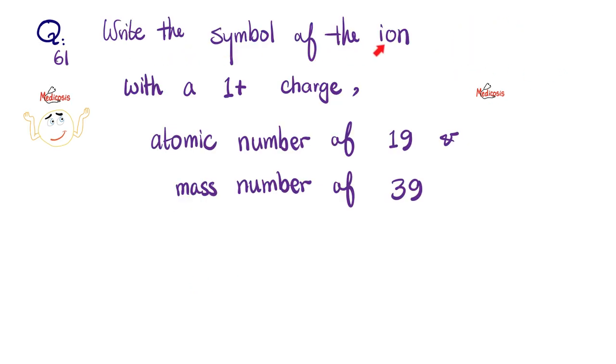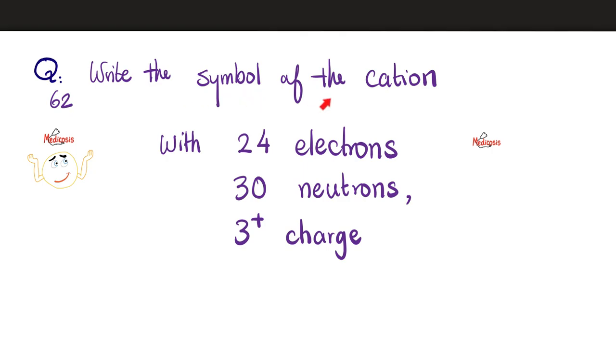Next, can you write the symbol for the ion with a plus one charge or positive one charge, whose atomic number is 19 and mass number 39? Easy. Look at your periodic table. I want the atomic number of 19, so go to element number 19. Who's element number 19? Mr. Potassium. And what's the mass number they gave me? 39. I put 39 on top. And then they wanted to be a positive one cation, so you just write it like this. Bingo. Can you do this one? Write the symbol of the cation with 24 electrons, 30 neutrons, and 3 plus charge. Let me know your answer in the comments. You'll find the answer key in the next video in this chemistry quick review playlist.